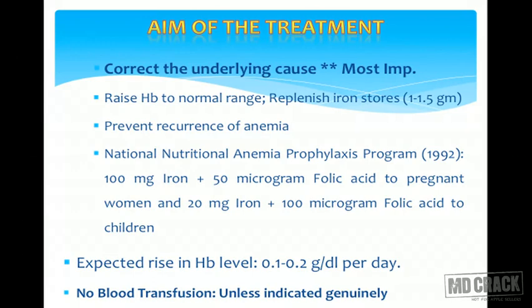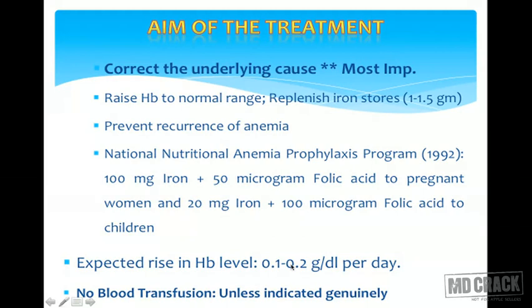Regarding treatment, the most important step is to correct the underlying cause. For example, if the patient has carcinoma of the cecum and you just treat with iron tablets, it is of no use — resect the tumor and the iron deficiency anemia will disappear. Then raise hemoglobin to normal levels. The expected rise in hemoglobin is around 0.1 to 0.2 grams per day with hematinics treatment.